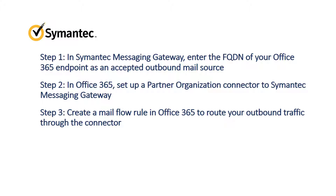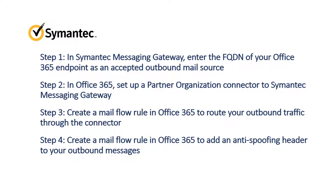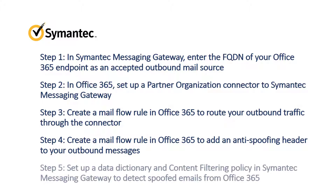However, it is possible for another Office 365 subscriber to spoof your domains and send spam emails that appear to come from your organization. The remaining steps set up a filter to detect spoofing and treat the emails as spam. In Step 4, you'll create an additional mail flow rule in Office 365 to add a header to outbound messages that legitimately come from your organization. You'll want to treat the header text like a password and change it often, and you'll also have to change it in the content filtering policy set up in the next step. In the final step, you'll set up a data dictionary of all your domains and use this dictionary and the header to create a content filtering policy. Any outbound message that does not originate in one of your domains or does not include the header is treated as spam and is not delivered outside of your organization.